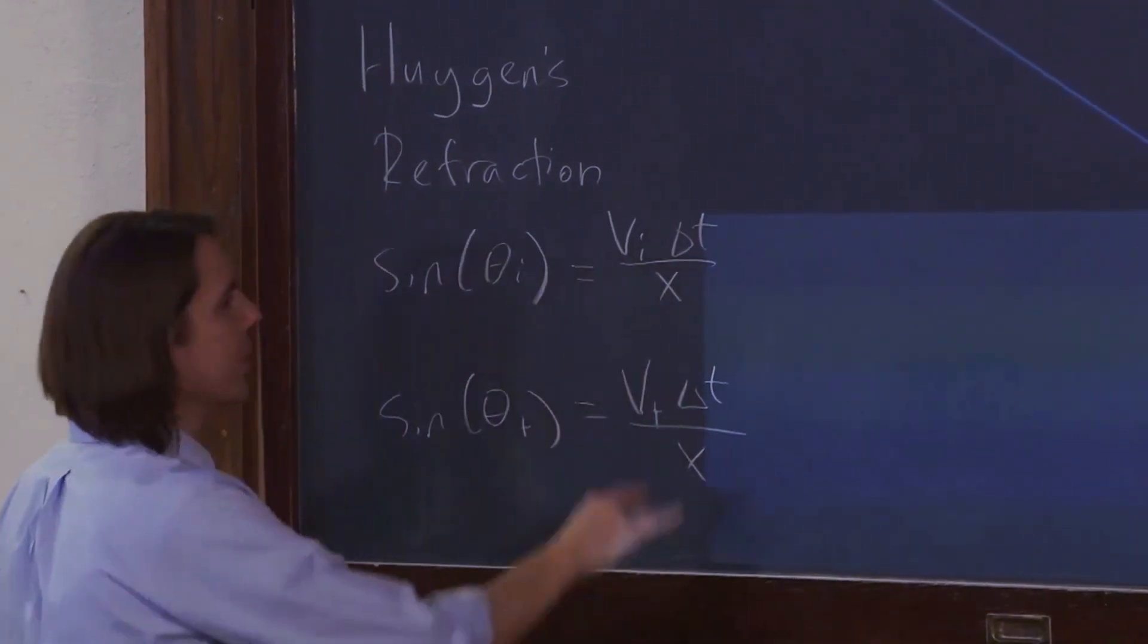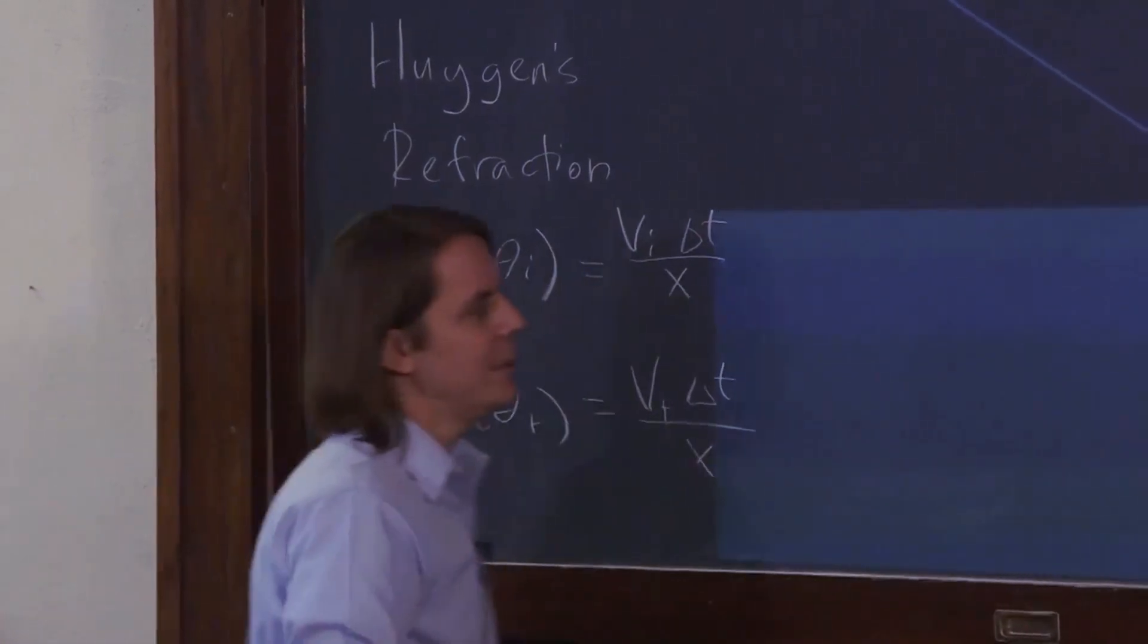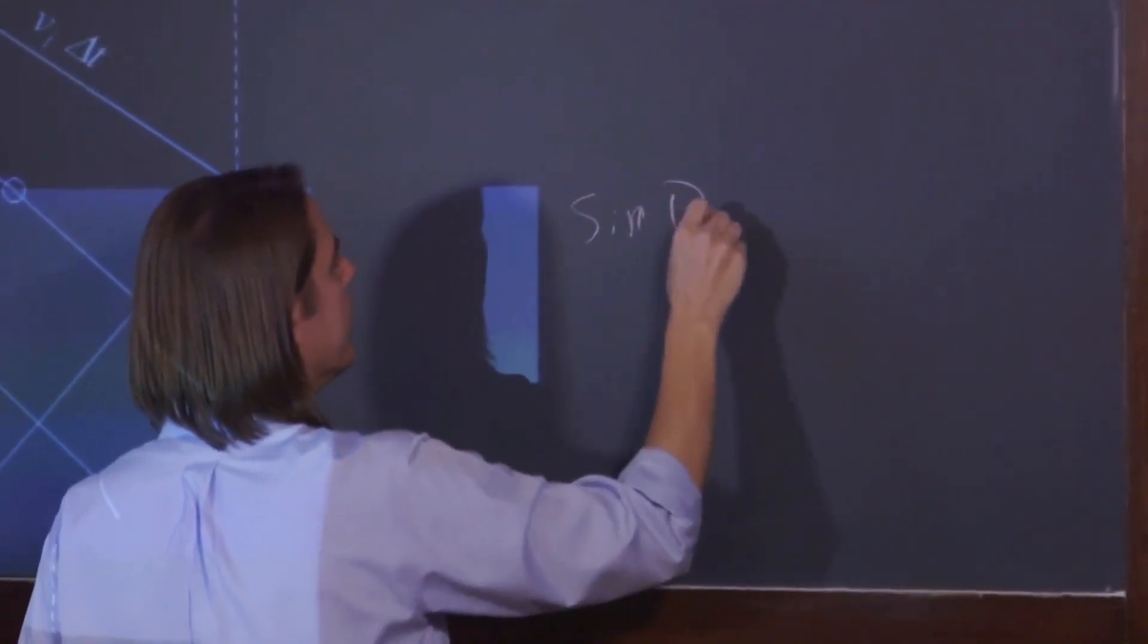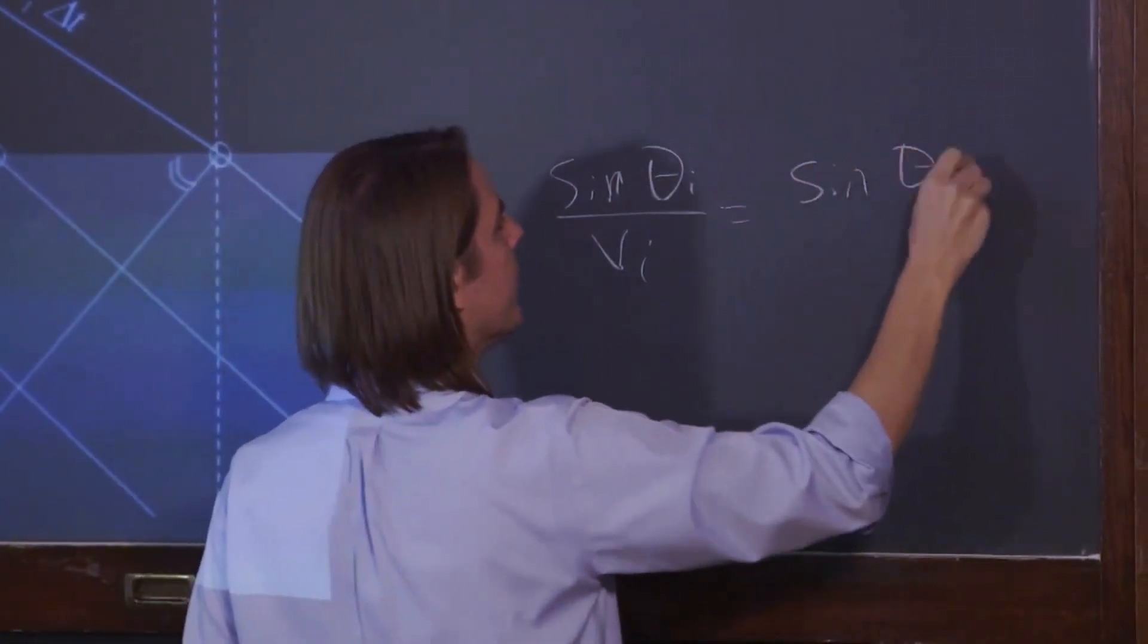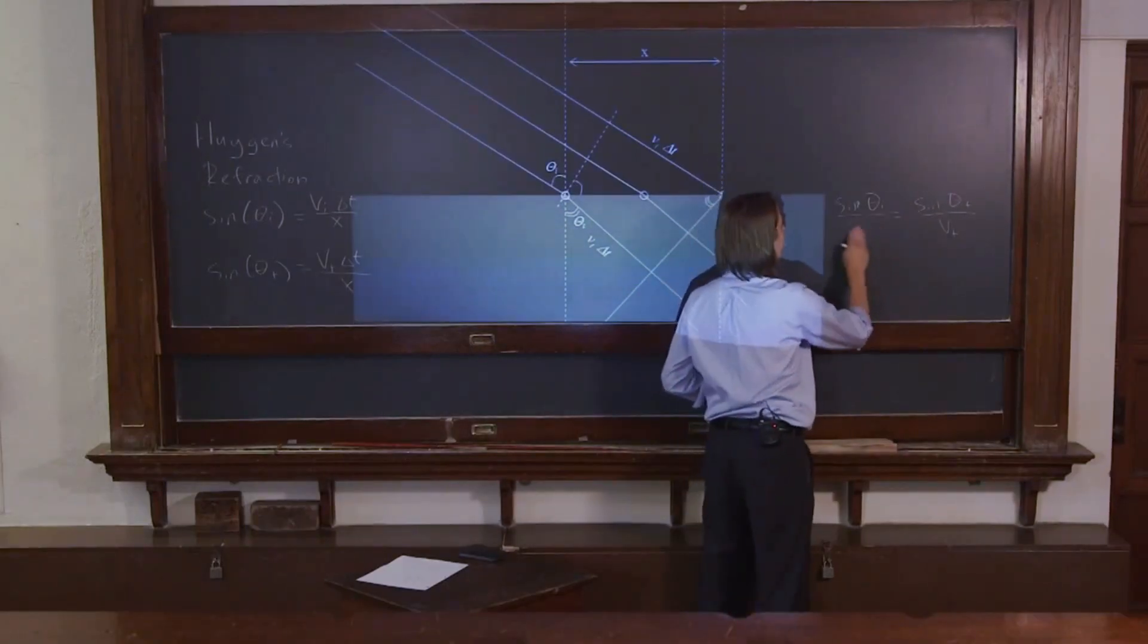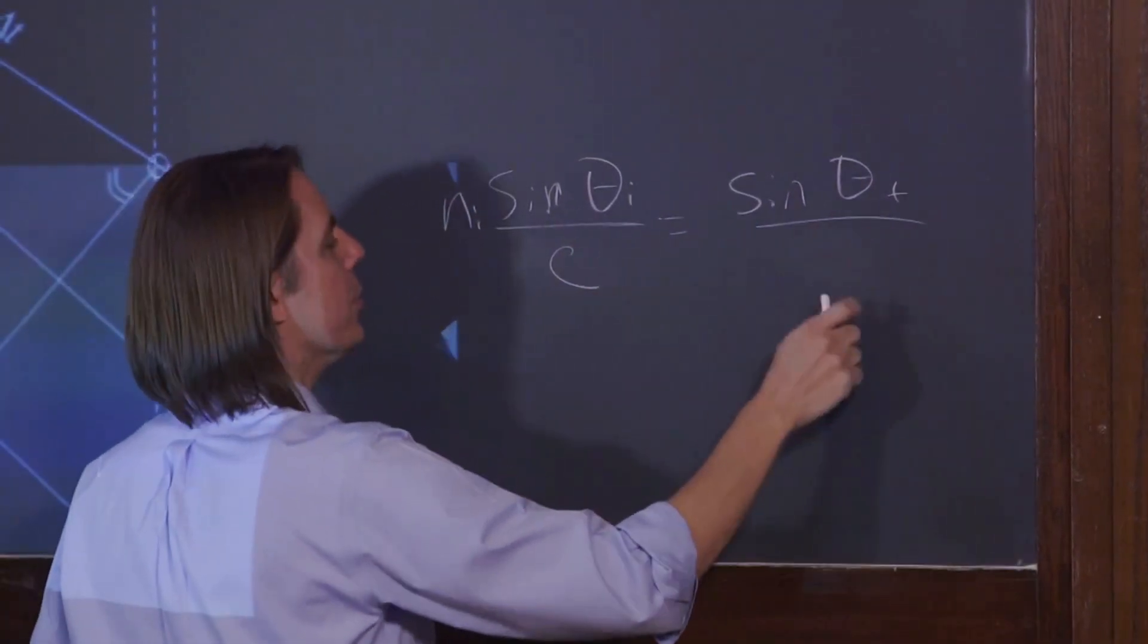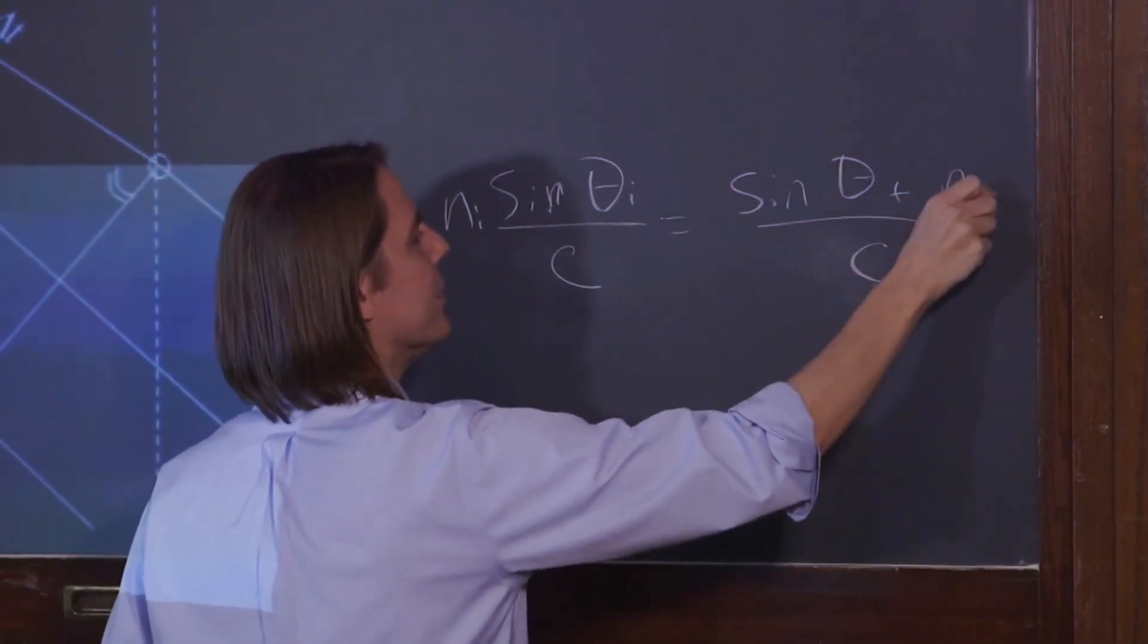And then, we could solve these for delta T over delta X and equate them, and basically you would have sine theta I over VI equals sine theta T over VT. So sine theta I over the velocity in I is sine theta T over the velocity in T. Well, that velocity, of course, is the speed of light. So we could say instead of VI, let's just call it what it is, speed of light over the index. Now let's call this one what it is, the speed of light divided by the index, Nt.